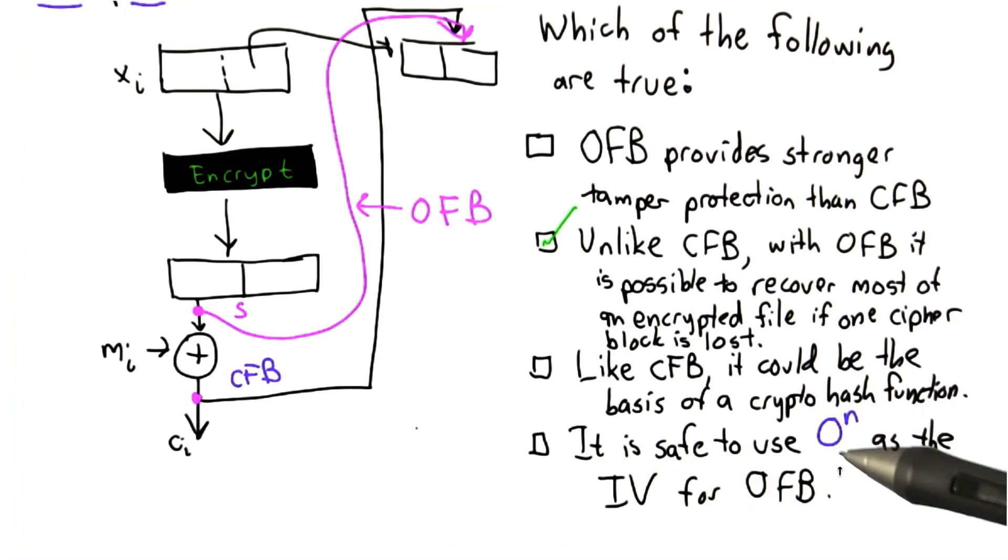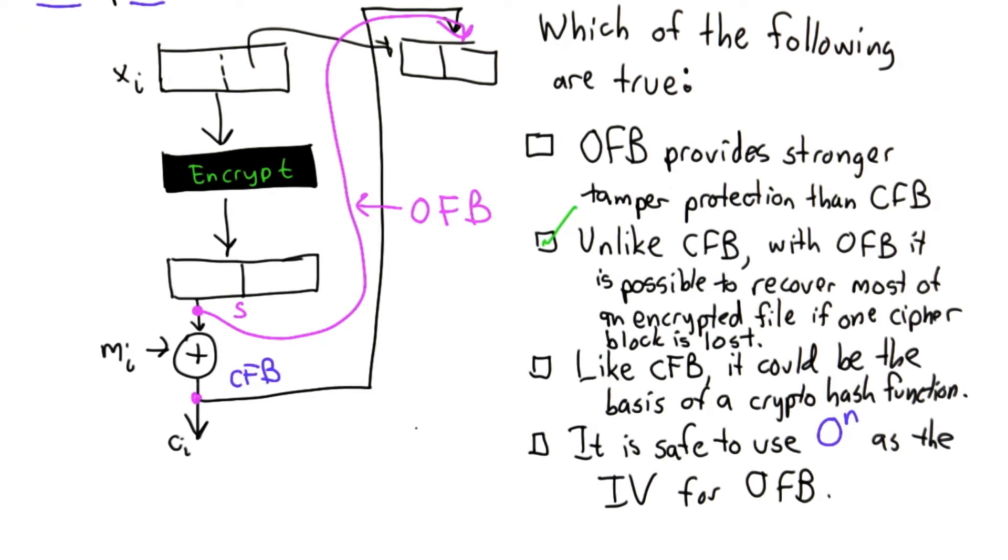For the fourth option, no, it is not safe to use the zero vector as the initialization vector. As with cipher feedback mode and cipher block chaining, the initialization vector is important to prevent an attacker from deriving repetition in the messages. Always using the zero initialization vector leaves output feedback mode vulnerable to this attack.